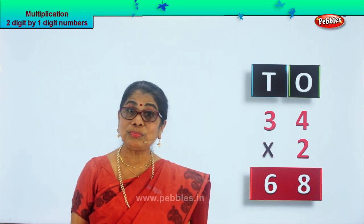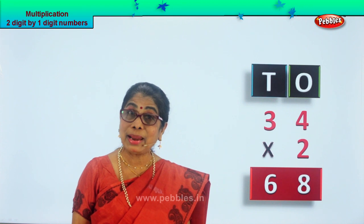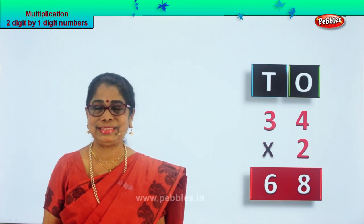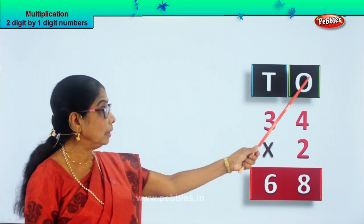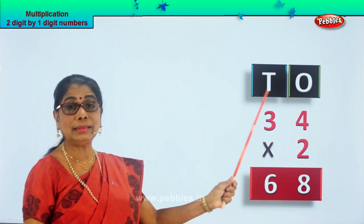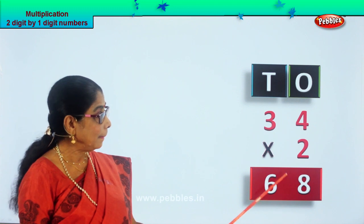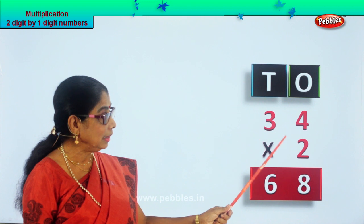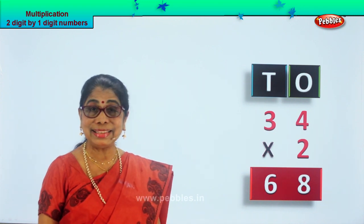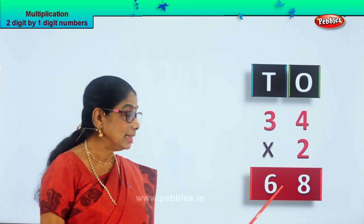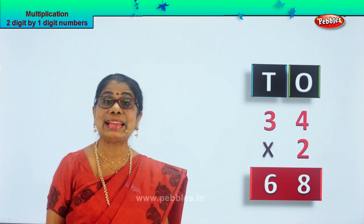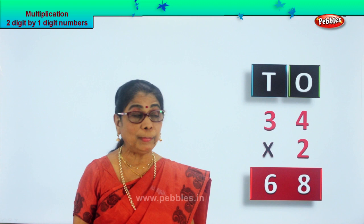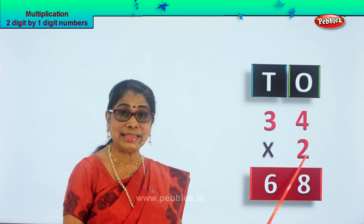Now you know how to multiply two digits by one digit. Always begin from the ones side, then go to the tens. We did four twos are eight, three twos are six. Your answer is sixty-eight — six tens, eight ones. Did you understand? Did you enjoy? Multiplication, two digits by one digit.